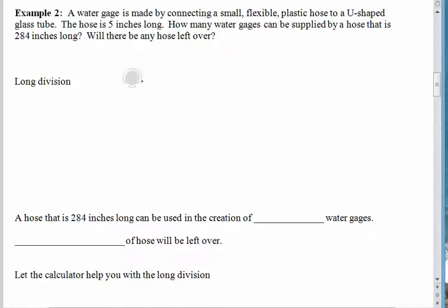So we take the 284, divide by 5. 5 doesn't go into 2, but 5 goes into 28. 5 goes into 28 five times. 5 times 5 is 25. And then we subtract. 28 minus 25 leaves us with 3. Bring down the 4. And now we ask, how many times 5 goes into 34? 5 goes into 34 six times. 6 times 5 is 30. We subtract, and there are 4 left over.